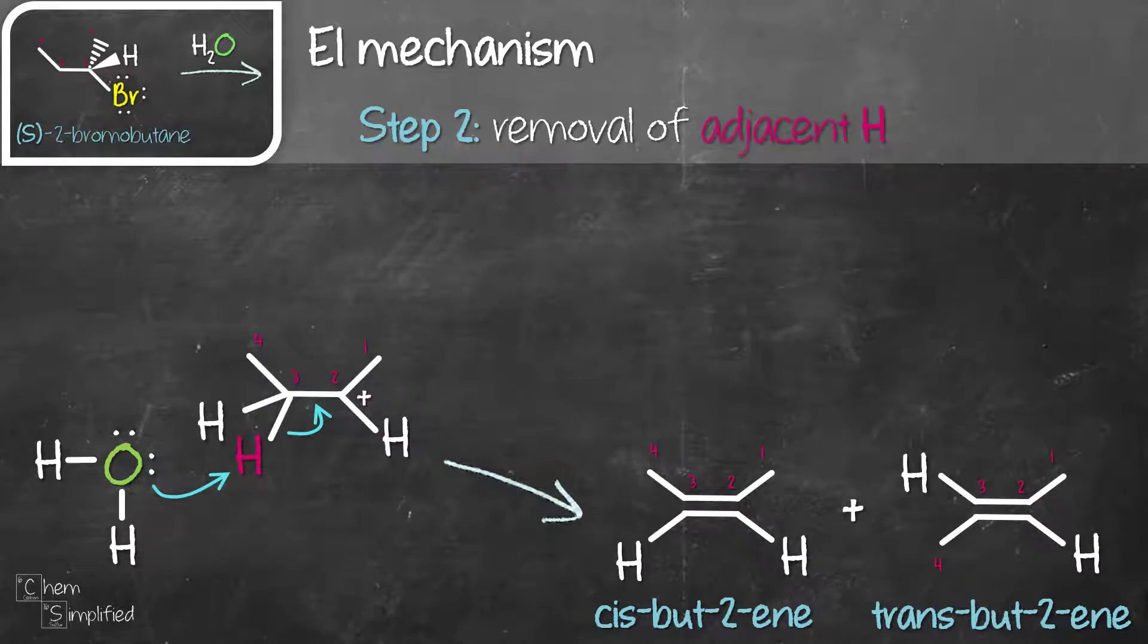So base removes a proton, C-C double bond is formed, so we get cis-but-2-ene. Depending on whichever hydrogen that it remove, we will get either cis-but-2-ene or trans-but-2-ene. So there are possibility of two products.